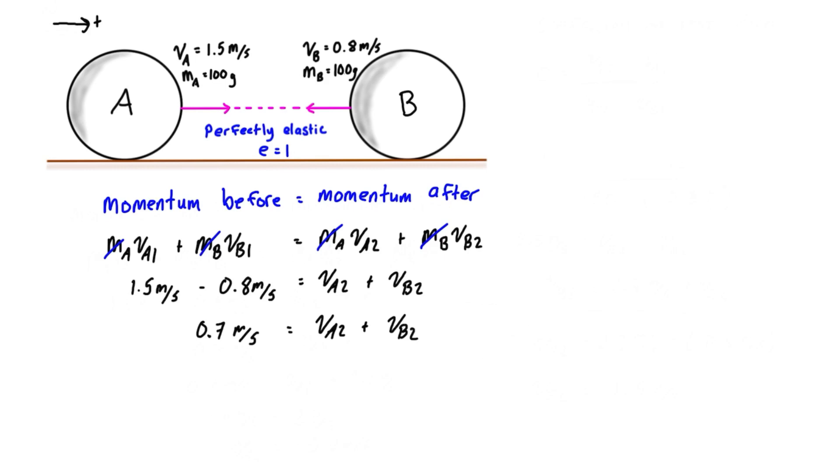So we've got two unknowns here in one equation. So we need a second equation. And that is going to be what we have for the coefficient of restitution. And this is an equation that you should try to memorize if you're studying dynamics. It is E equals VB2 minus VA2 over VA1 minus VB1. Ultimately, it is the relative velocity of the separation just after impact divided by the relative velocity of the approach just before impact. And E was given to us. It's perfectly elastic. So that means that E is equal to 1.